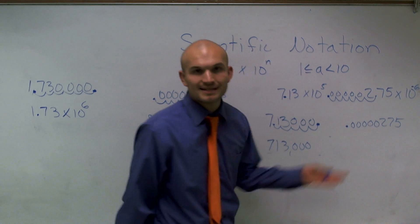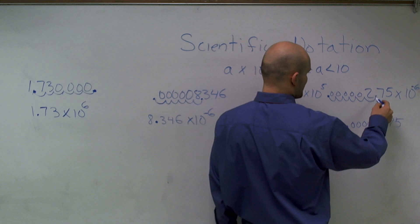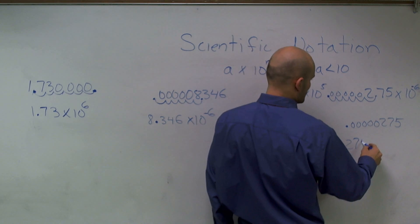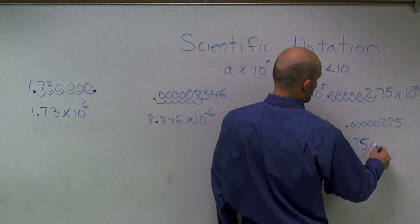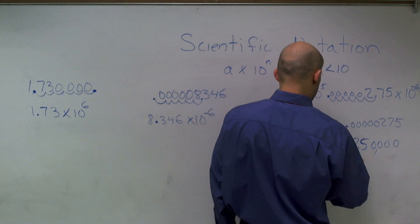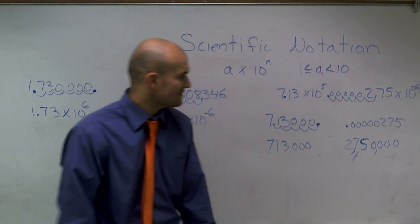Now I know a lot of you probably did it the other way, which I had written down, so let's do that. So if I move that 1, 2, and then there's going to be four more zeros, it would have been 2,750,000.